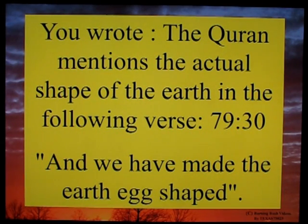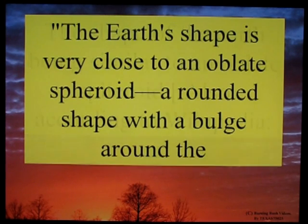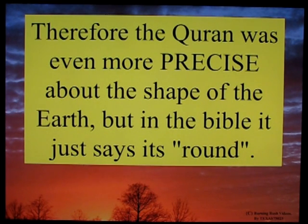You wrote: 'The Quran mentions the actual shape of the earth in the following verse 79:30 — and we have made the earth egg-shaped.' The shape of the earth being similar to an oblate spheroid, also according to Wikipedia: the earth's shape is very close to an oblate spheroid, a rounded shape with a bulge around the middle, although the precise shape — the geoid — varies from this by up to 100 meters or 327 feet. Therefore the Quran was even more precise about the shape of the earth, but in the Bible it just says it's round.